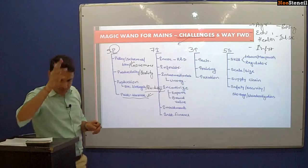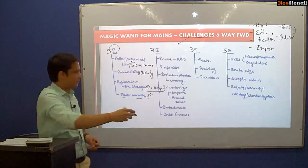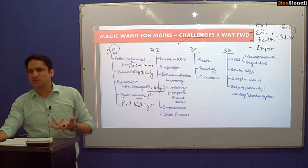The fifth P is profitability. We need viable, profitable agriculture. The profitability of agriculture is a must because otherwise it will not be attractive to draw the youth of the nation. So these are the five P challenges of agriculture.